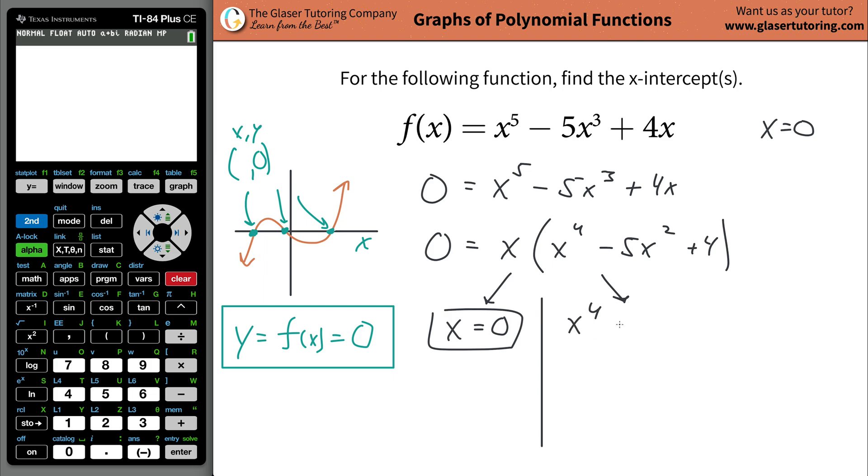But here we have x to the fourth minus five x squared plus four, and I want to find the x values here that make this thing equal to zero. Now you might say, okay, how do we do this? You're like, oh my goodness, it's a quartic, what am I going to do? Well, I bet you can solve this x squared here. Tell me, x squared minus five x plus four is equal to zero, what would this be?